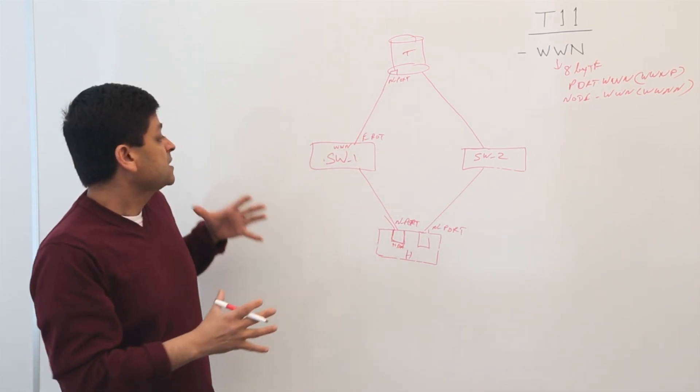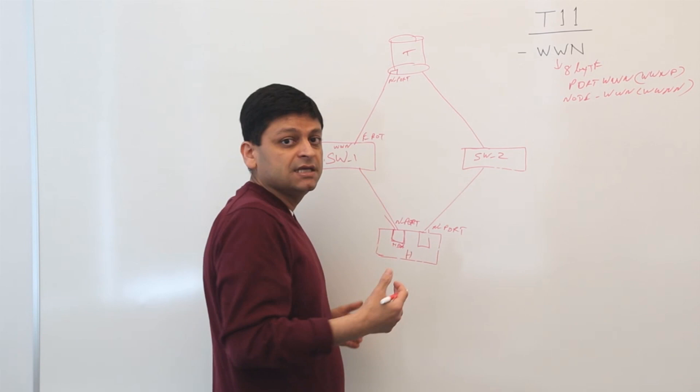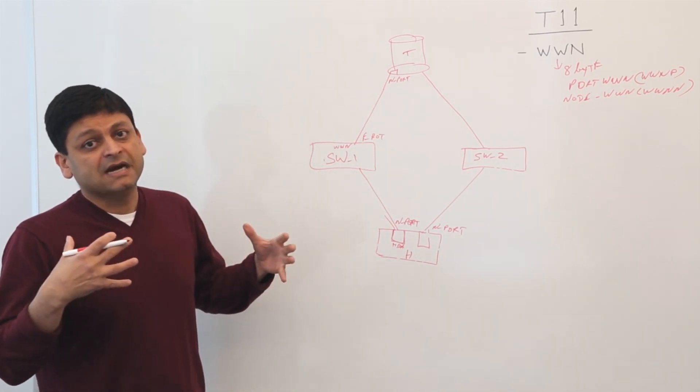Now, the main component here is FC addresses. So as Ethernet, we have a MAC address. In the LAN, we have an IP address.